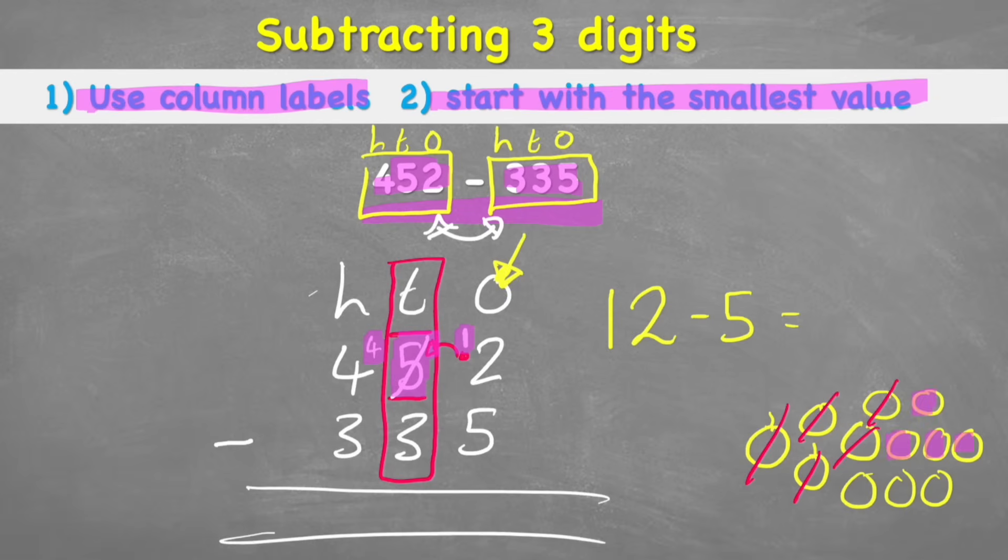And now let's count how many I've got left. 1, 2, 3, 4, 5, 6, and 7. That was difficult, wasn't it? So now I've finished my first column. 12 subtract 5 is 7. Awesome.